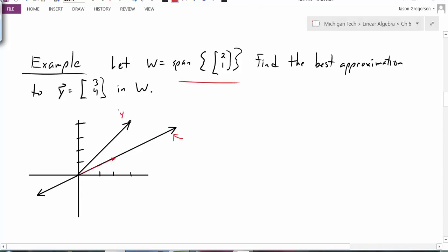And the span of that vector is this line. And then I have the vector y, which is the vector [3,4]. And so if I want to find the vector here along this line that best approximates the vector [3,4], I would be looking for y-hat, which is the projection of y onto my subspace W.